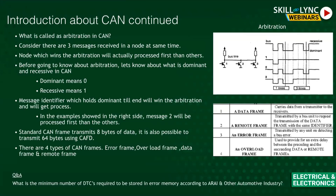This is how arbitration is implemented in CAN — if multiple messages are received, they are processed according to this algorithm. Moving to the types of frames: frames are essentially messages, and there are four different types. A data frame consists only of data, while a remote frame is used when the receiver requests data from the transmitter.